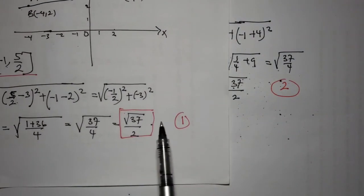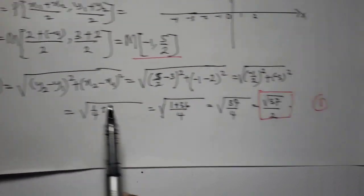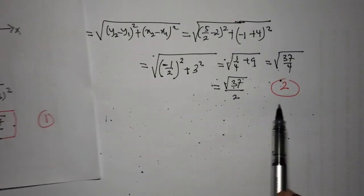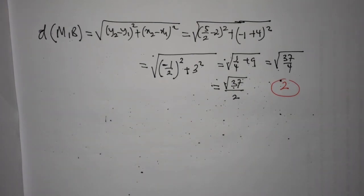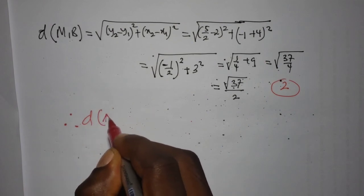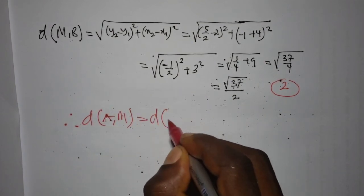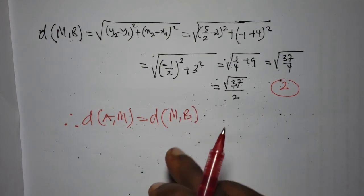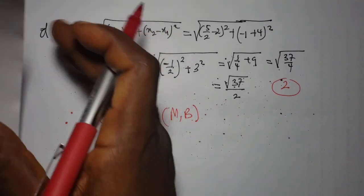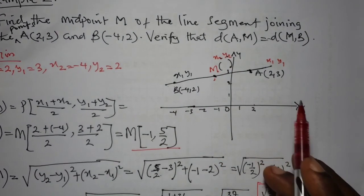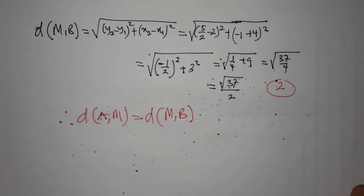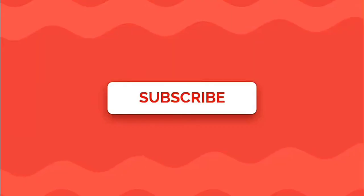From equation 1, the distance between A and M is √37/2, and from equation 2, the distance between M and B is also √37/2. Therefore, the distance between point A and point M is indeed the same as the distance between point M and point B. This is true because point M divides the line segment AB at its midpoint. If you like this video please hit the like button, share with your friends, and subscribe. Thank you, see you in the next lecture.